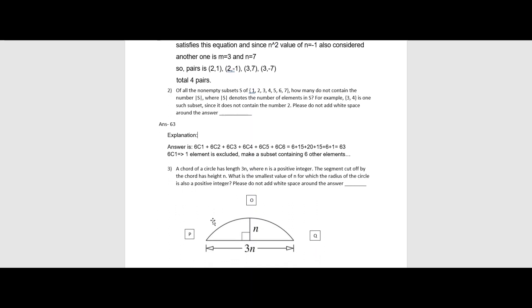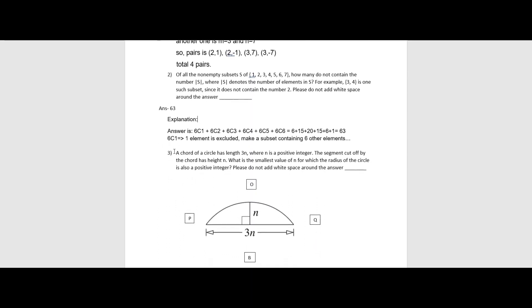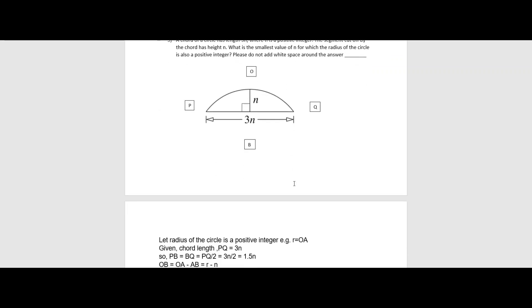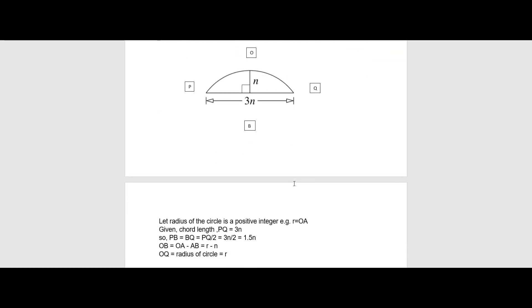Moving on to the next question. Here we have a chord of a circle has length 3N. This is the 3N length. That is let's name it P and Q, where N is a positive integer. The segment cut off by the chord has height N. It's shown N. What is the smallest value of N for which the radius of the circle is also a positive integer. I have already named it according to the way they have solved it.